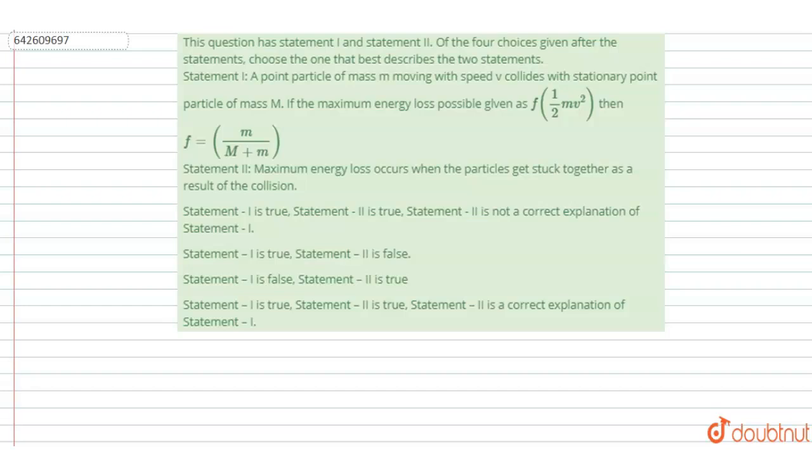Of the four choices given after the statements, choose the one that best describes the statements. A point particle of mass m moving with speed v collides with a stationary particle of mass M. If the maximum energy loss possible is f times half mv squared, then the value of f will be what?